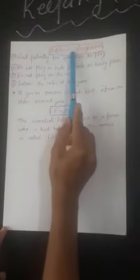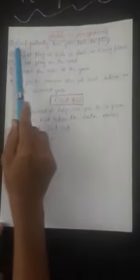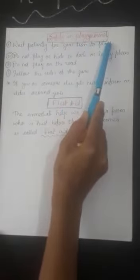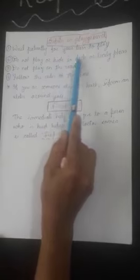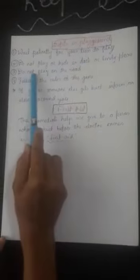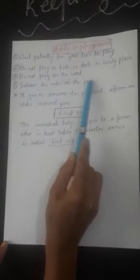Safety rules in the playground: Wait patiently for your turn to play. Do not play or hide in dark or lonely places. Do not play on the road. Follow the rules of the game.